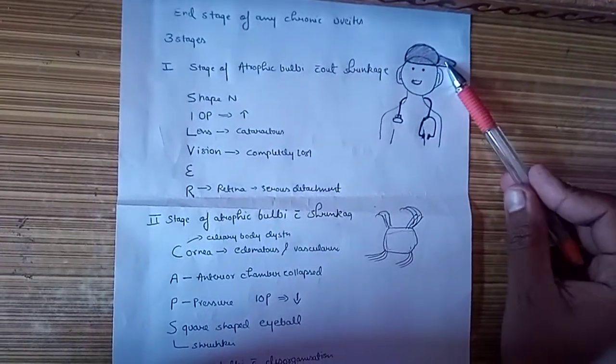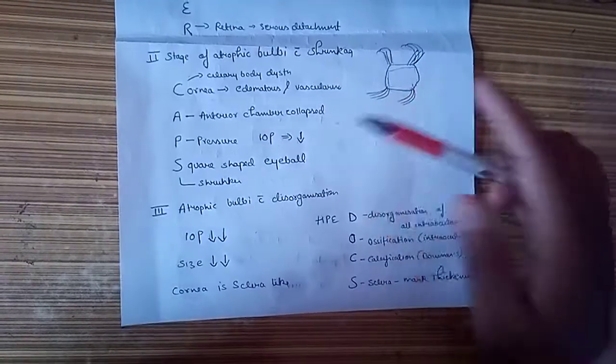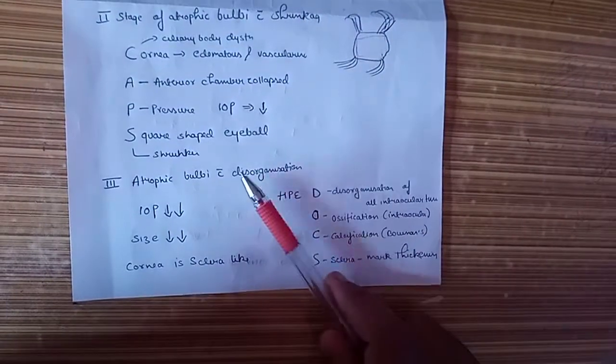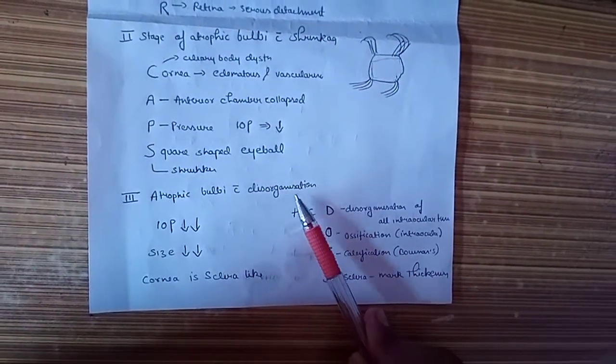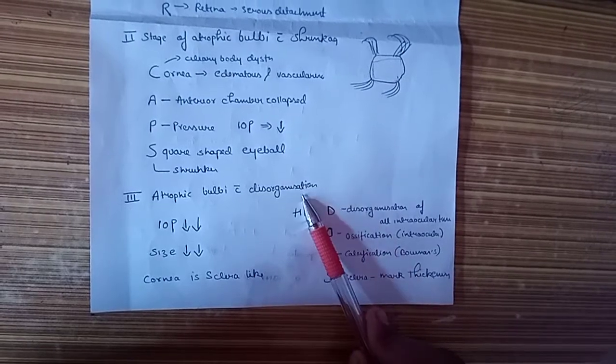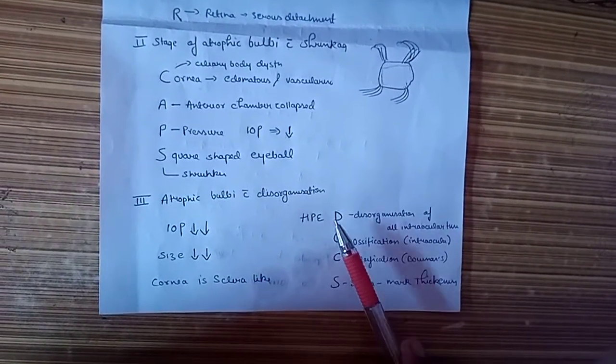The last one is doctor, DOCS. The third stage is atrophic bulbi with disorganization. The main thing we need to remember in this stage of disorganization is not the features but the histopathology.